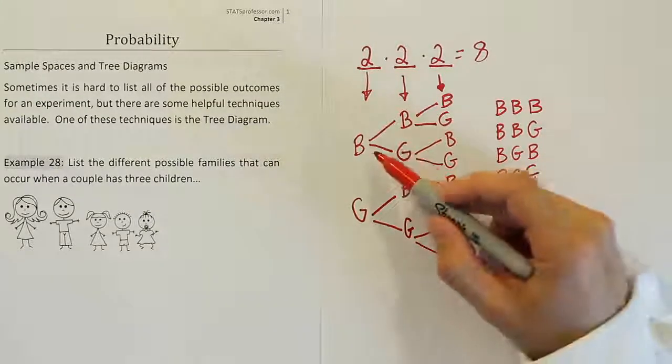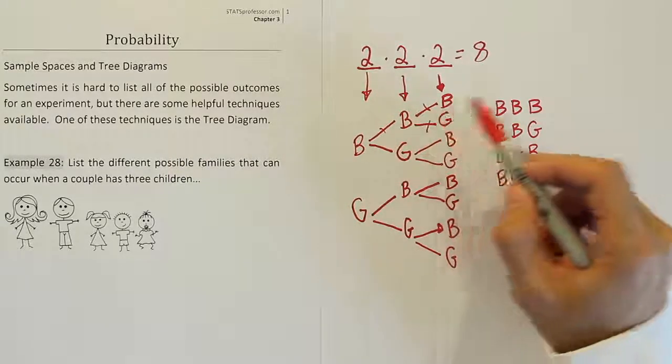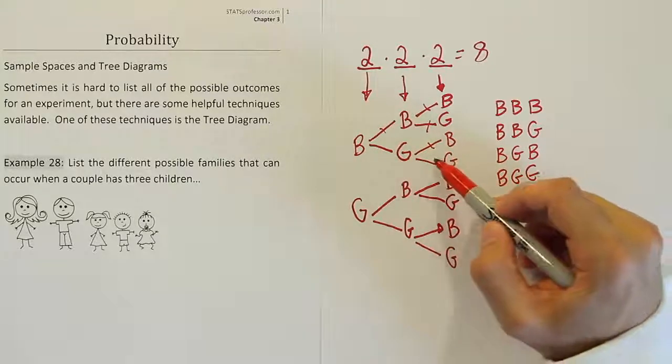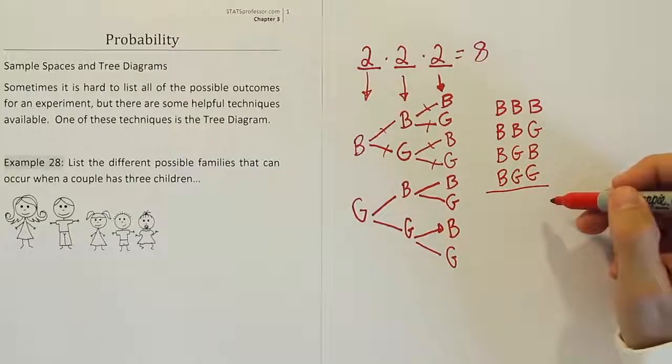So just following the paths, from here to here to here. So we have used up that path from here to here to here. We used up that path from here to here to here. We used up that path. And from here to here to here, we used up all those paths. That's how we got the first four possible families that could occur.